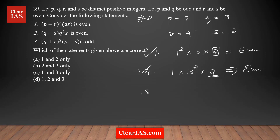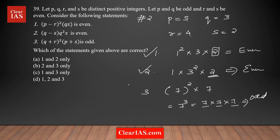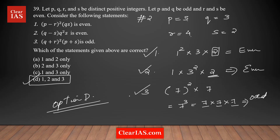Statement three: (q plus r) squared times (p plus s) equals (three plus four) squared times (five plus two) equals seven squared times seven, which is seven cubed. Since seven is odd and odd times odd times odd is odd, statement three is also correct. All three statements are correct, confirming option D is the right answer. Both approach one and approach two lead to the same conclusion.